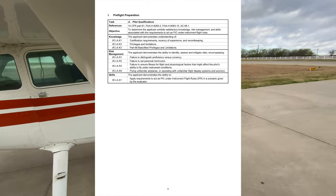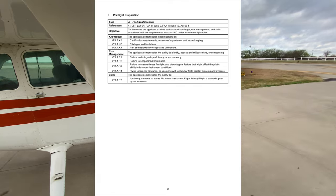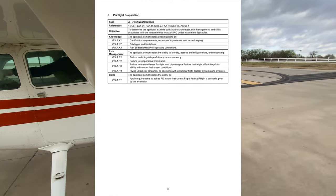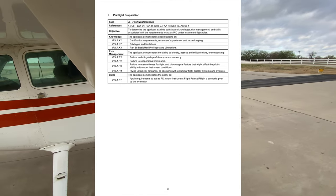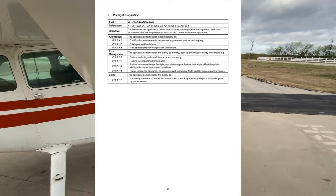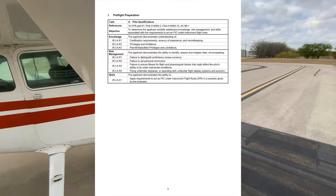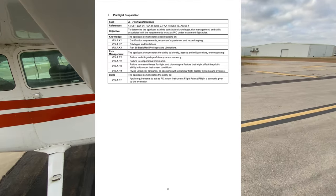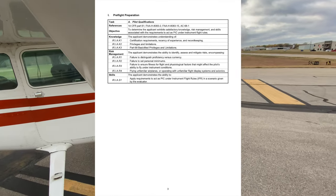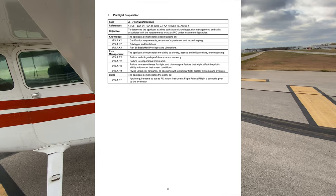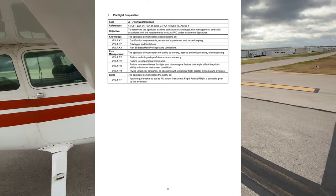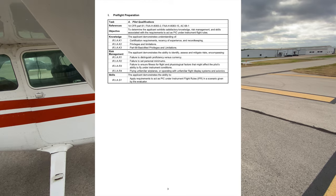Romeo 4 covers flying unfamiliar airplanes or operating with unfamiliar flight display systems and avionics. For example, even if you're legal to fly a 172 with a six-pack, if you were trained only with a G1000, it would be unwise to fly a six-pack without additional training. This goes back to the proficiency versus currency requirement.